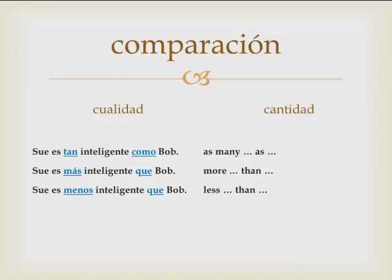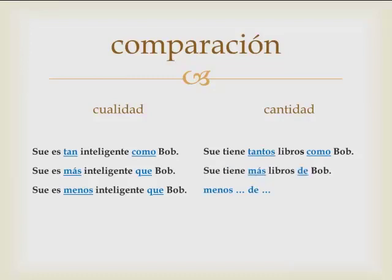On the right-hand side we're going to compare quantities. As many as, more than, or less than. In Spanish, for 'as many as' you say tantos como. And for more than and less than, instead of más que, it's going to be más de — if you're talking about a quantity. For example: Su tiene tantos libros como Bob — Su has as many books as Bob. Su tiene más libros de Bob — Su has more books than Bob. Su tiene menos libros de Bob — Su has fewer books than Bob.